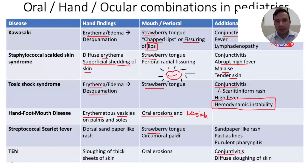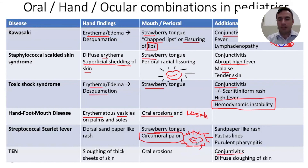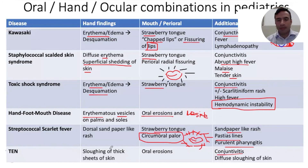Streptococcal scarlet fever also has the strawberry tongue, but looking around the mouth there is a characteristic perioral pallor. Instead of fissuring on or around the lips, you have mild diffuse erythema of the face that spares the area adjacent to the mouth, making that skin look relatively spared. These patients also have petechiae in flexural areas, especially the antecubital fossa, along with a sandpaper-like rash and purulent pharyngitis consistent with the group A strep cause. TEN is classically associated with sloughing of thick skin and can have mucosal involvement including conjunctivitis or oral disease.